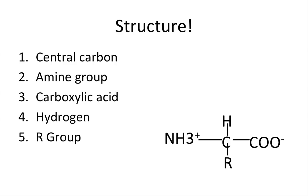So, structure. There are five main parts to the amino acid: the central carbon in the middle, the amine group, the carboxylic acid group, the hydrogen group, and then the R group. The R group is where all the magic happens — this is what distinguishes each amino acid from the others. By R, it just means a group of carbons, hydrogens, nitrogens, oxygens, or whatever it is.